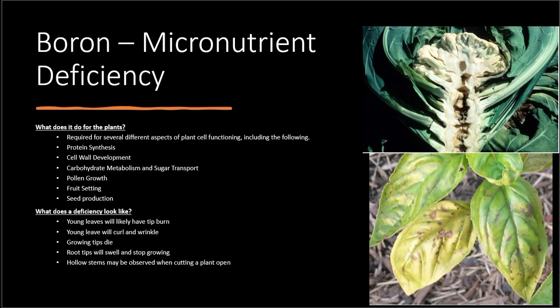Boron — what's it used for in plants? It's required for several different aspects of plant cell functioning, including protein synthesis, cell wall development, carbohydrate metabolism, sugar transport, pollen growth, fruit setting, and seed production.